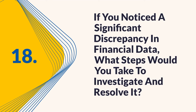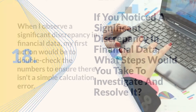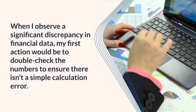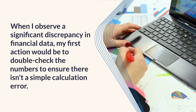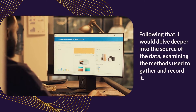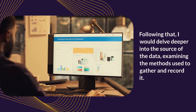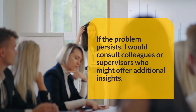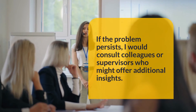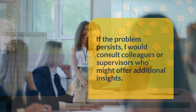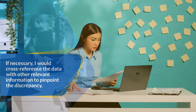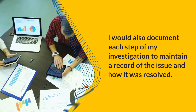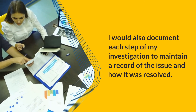Question 18: If you noticed a significant discrepancy in financial data, what steps would you take to investigate and resolve it? My first action would be to double-check the numbers to ensure there isn't a simple calculation error. Following that, I would delve deeper into the source of the data, examining the methods used to gather and record it. If the problem persists, I would consult colleagues or supervisors for additional insights, and if necessary, cross-reference the data with other relevant information to pinpoint the discrepancy. I would document each step of my investigation to maintain a record of the issue and how it was resolved.